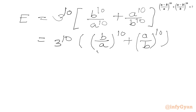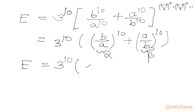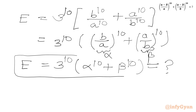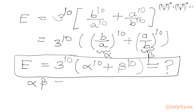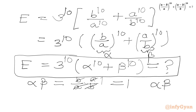Now we will assume α = b/a and β = a/b. So ultimately we are looking for the expression 3¹⁰ × (α¹⁰ + β¹⁰). This is our target expression. Now we will calculate α × β. α = b/a and β = a/b — these cancel and we get 1. So α × β = 1. Very important result.